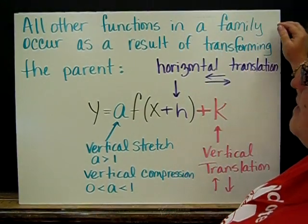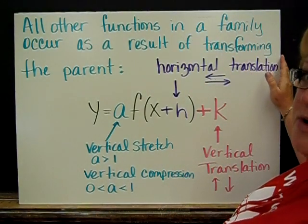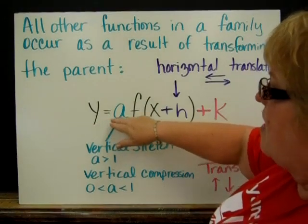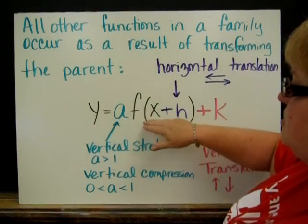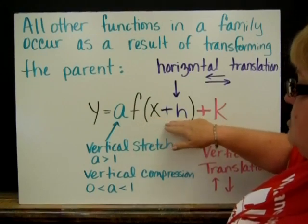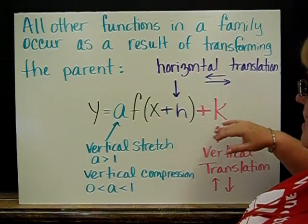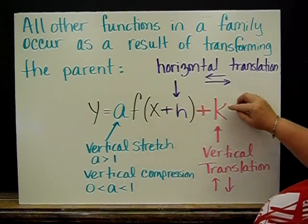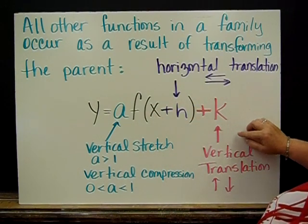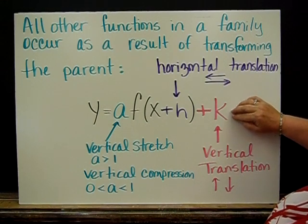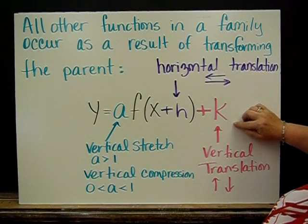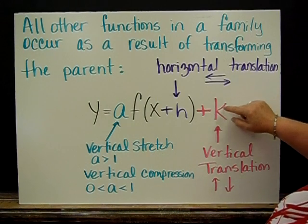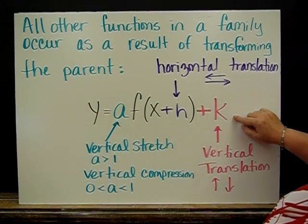All other functions in a family occur as a result of transforming the parent. Here is a function: y = a·f(x+h) + k. Notice this k is outside of the parentheses. This k tells us that this is a vertical translation, and it tells us to move our graph either up or down. When this is a positive k, we go up k units. When it's negative, we go down.